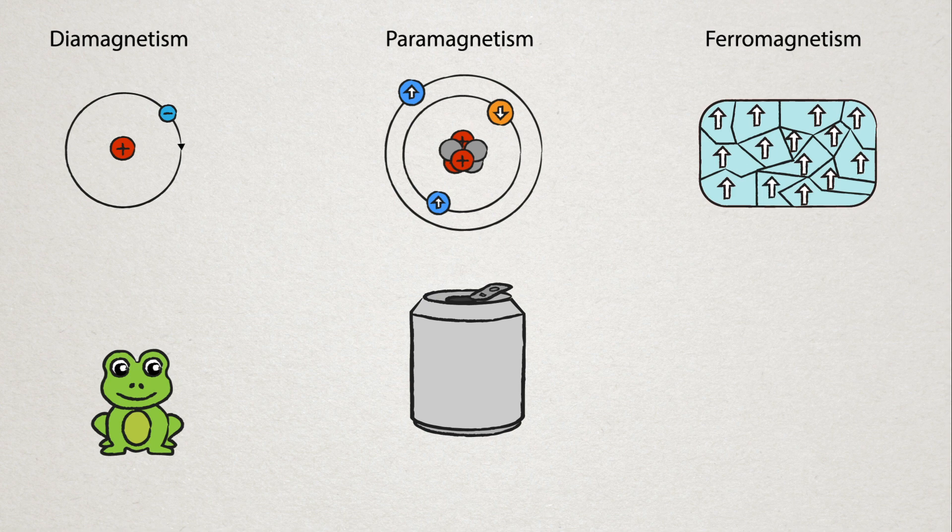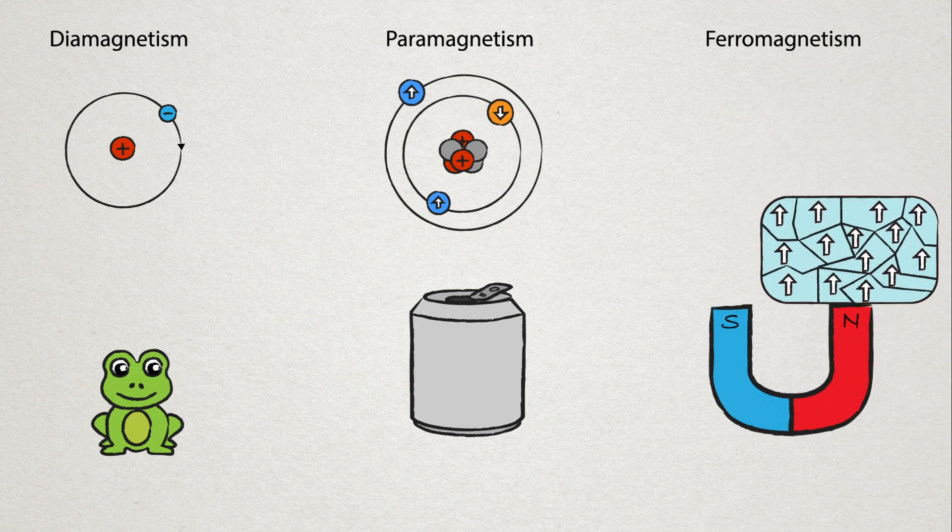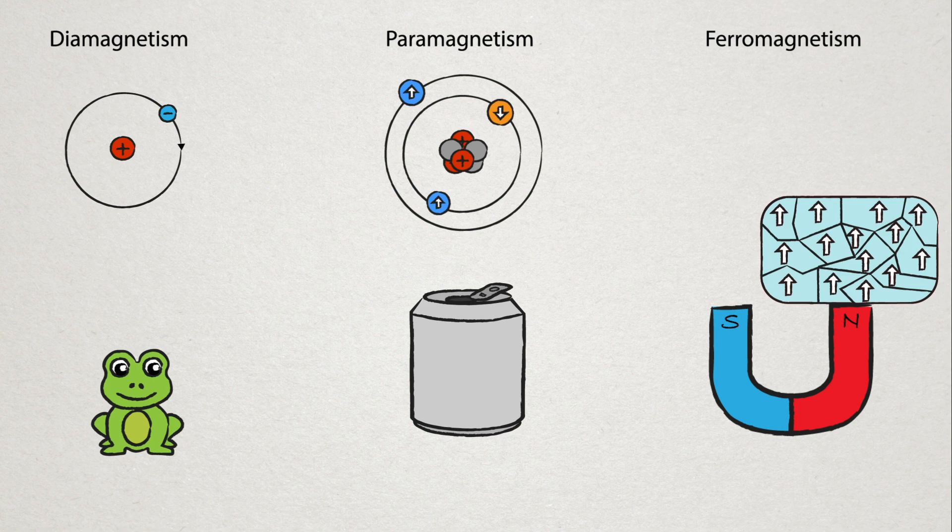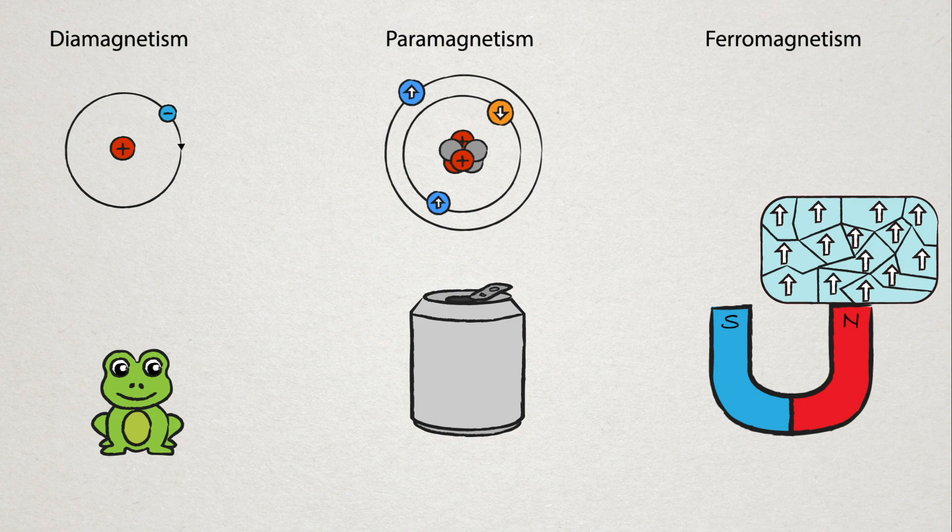The last main type of magnetism is ferromagnetism. This is when paramagnetic atoms are closely interacting, for example in solid materials. And these interactions lead to many of these atoms' electrons deciding to point in the same direction as one another, forming domains of like magnetic states.